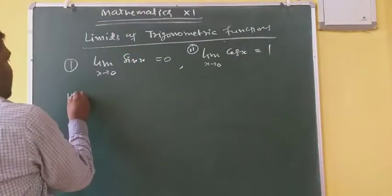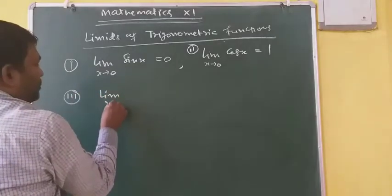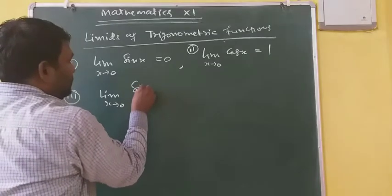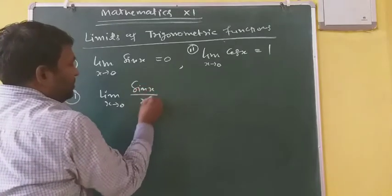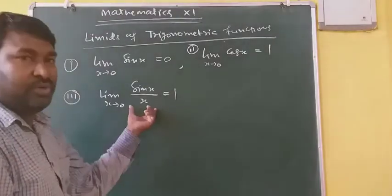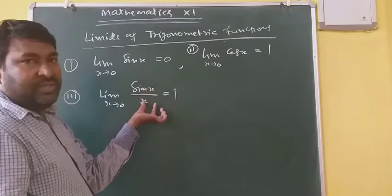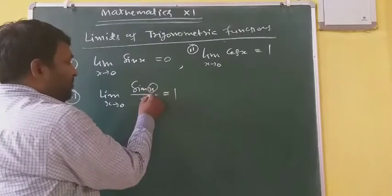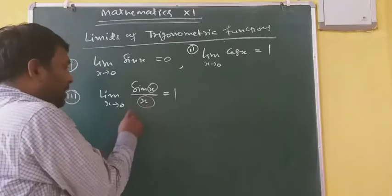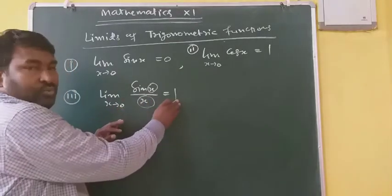Now the next one. Limit x tends to 0 of sin x upon x — that will give you 1. This is a very important formula. Sin theta upon theta: whatever the angle is, if the same angle is in the denominator and tends to 0, then only it will give you 1.